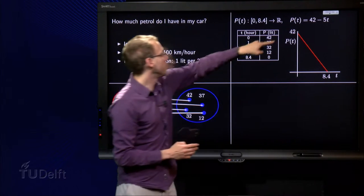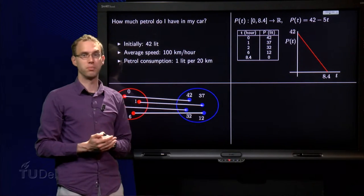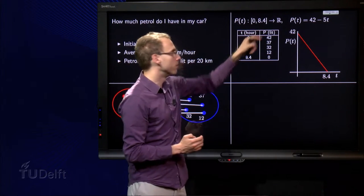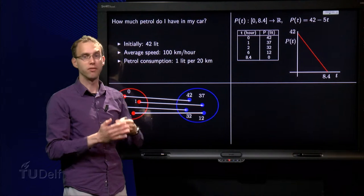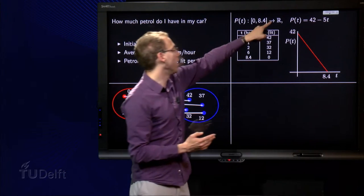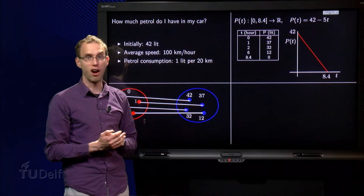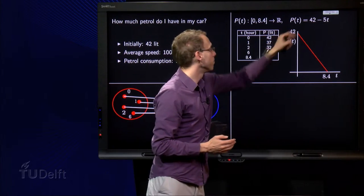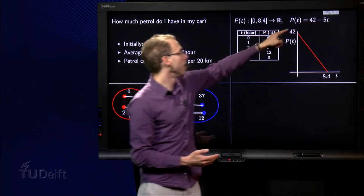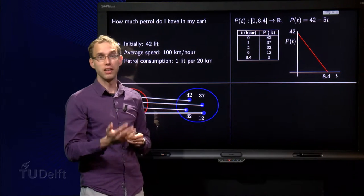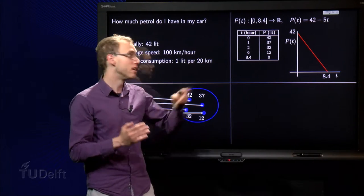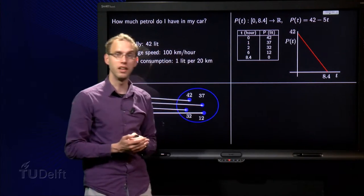Another way is to give an algebraic description over here. The domain of my function will be 0 until 8.4. After that, well, I don't have any petrol left. And the output will be a number in R. And the formula P, the amount of petrol as a function of T time, equals 42 minus 5 times T. I lose every hour 5 liters. The second way to represent a function.